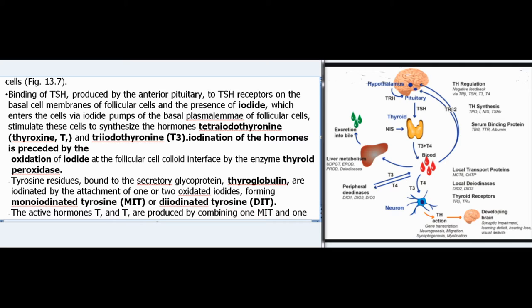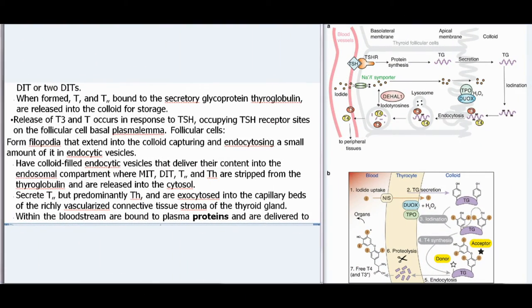Binding of TSH, produced by the anterior pituitary, to TSH receptors on the basal cell membranes of follicular cells — along with the presence of iodide, which enters via iodide pumps — stimulates these cells to synthesize tetraiodothyronine (thyroxine, T4) and triiodothyronine (T3). Iodination is preceded by oxidation of iodide at the follicular cell-colloid interface by the enzyme thyroid peroxidase. Tyrosine residues bound to the secretory glycoprotein thyroglobulin are iodinated by attachment of one or two oxidized iodides, forming monoiodinated tyrosine (MIT) or diiodinated tyrosine (DIT). The active hormones T4 and T3 are produced by combining one MIT and one DIT, or two DITs.